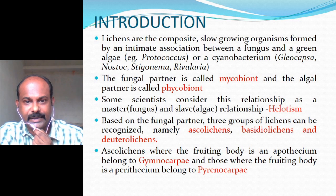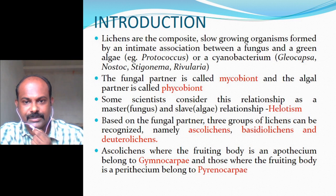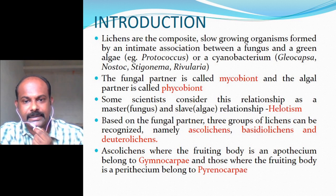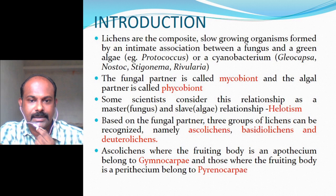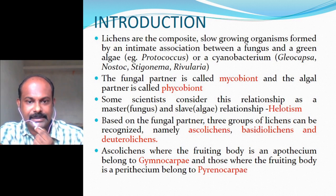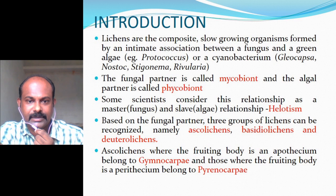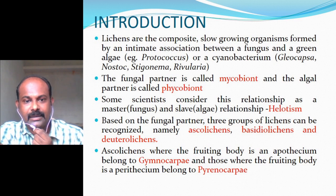Since green algae can also come into association with fungi — not just cyanobacteria — the term phycobiont is nowadays replaced by the term photobiont. Some scientists consider this relationship a master and slave relationship called helotism, where the fungus is the master and the alga is the slave. This contrasts with the earlier concept that algae and fungi enter into a mutual relationship.